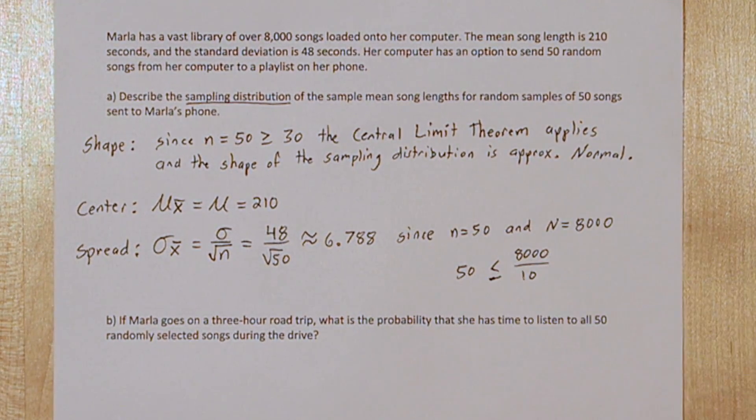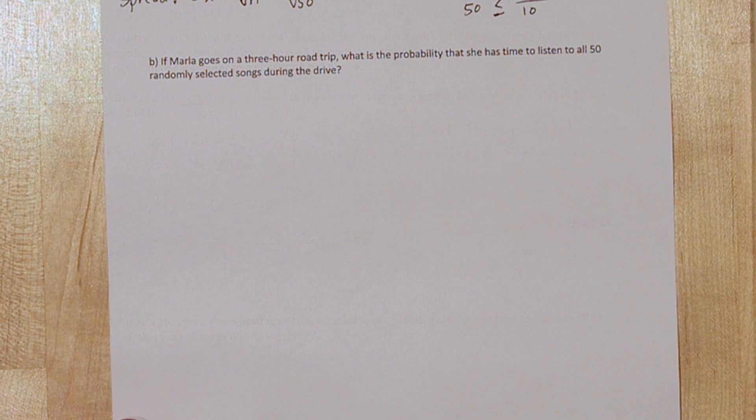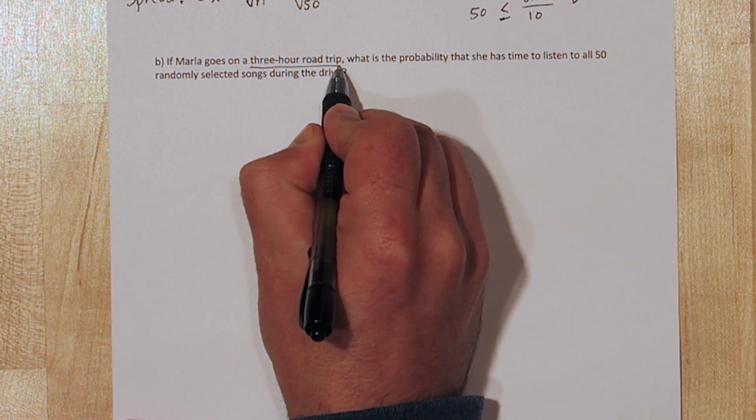To figure out part b, we have to calculate what the maximum average song length can be to still squeeze all 50 songs into 3 hours.